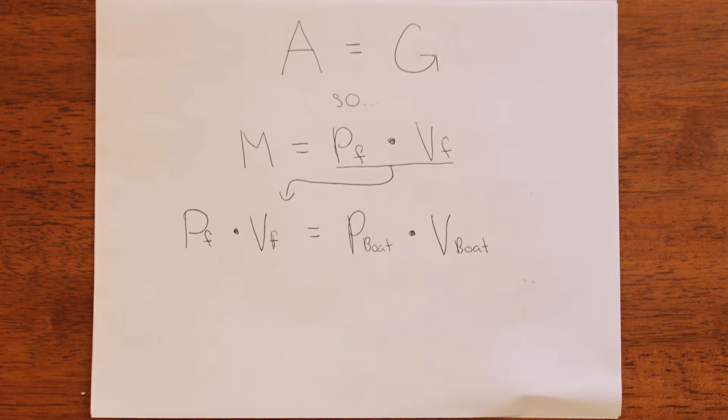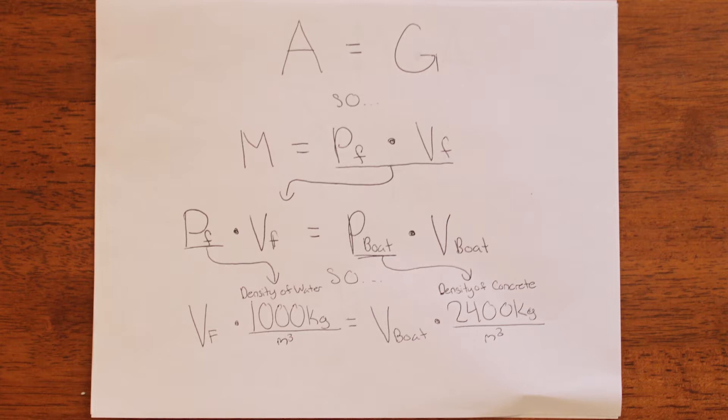The mass of the boat is the density of the boat times the volume. The density of water is 1,000 kilograms per meters cubed, and the density of concrete is 2,400 kilograms per meters cubed. So the volume of water displaced must be 2.4 times the volume of the boat, which means 70% of the total volume of the boat must be hollow.